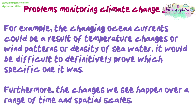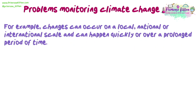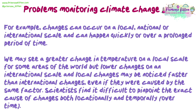Furthermore, the changes we see happen over a range of time and spatial scales. Changes can occur on a local, national, or international scale and can happen quickly or over a prolonged period of time. We may see a greater change in temperature on a local scale for some areas of the world but lower changes on an international scale, and local changes may be noticed faster than international changes, even if they were caused by the same factor. Scientists find it difficult to pinpoint the exact cause of changes both locationally and temporally.